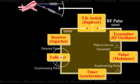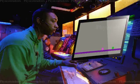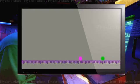The detected output is sent to the indicator. The indicator is a cathode ray tube. The CRT displays the original transmitted pulse as well as the detected echo pulse along a horizontal baseline.